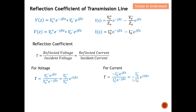Typically we define the reflection coefficient at the load side, where z equals zero. Substituting z equals zero, and noting that e⁰ equals one, we obtain the reflection coefficient at the load, Γ_L, both from the voltage and current expressions. These two values should be identical.